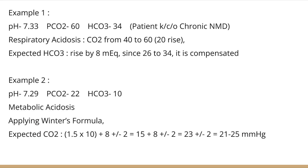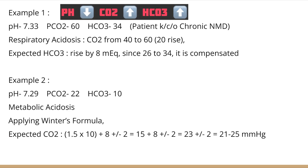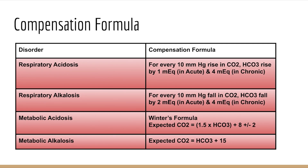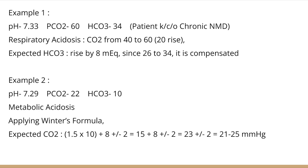Example one for formulas: pH 7.33, PCO2 60, bicarbonate 34, patient is a known case of chronic neuromuscular disorder. It is acidosis, CO2 and bicarbonate both increased and opposite to pH — respiratory acidosis. CO2 has risen from 40 to 60, a rise of 20. In chronic process, for every 10 mmHg rise in CO2, bicarbonate rises by 4 mEq/L; so expected rise is 8. Bicarbonate rose from 26 to 34 — exactly 8 — so it is well compensated.